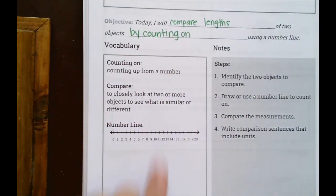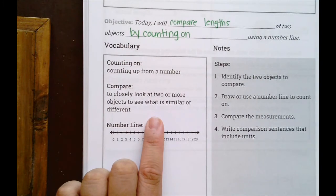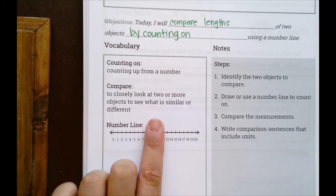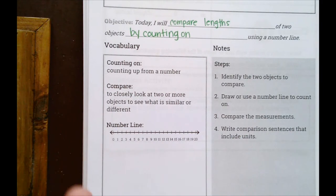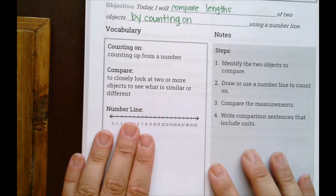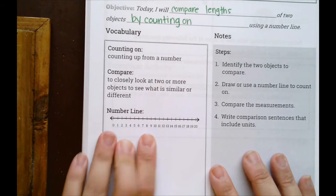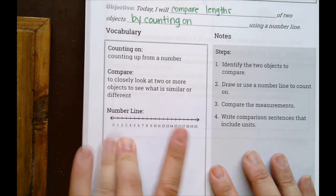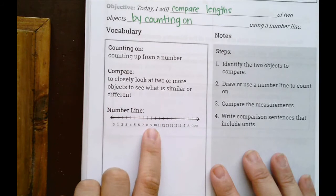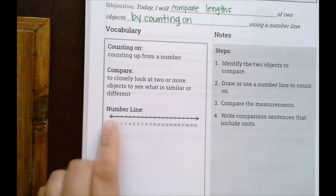Today when we're comparing our lengths, we will be comparing in numbers. You can either say that something is shorter than another, or you can say something is longer than another object. And then lastly, this is our number line. You guys are well familiar with the number line — you've been using them for a few years now. We use this as a math tool to count on.